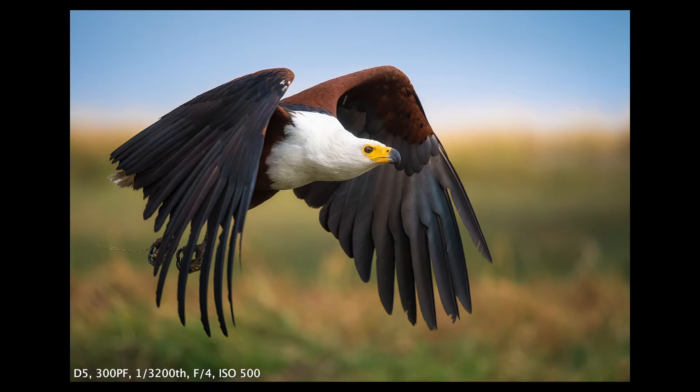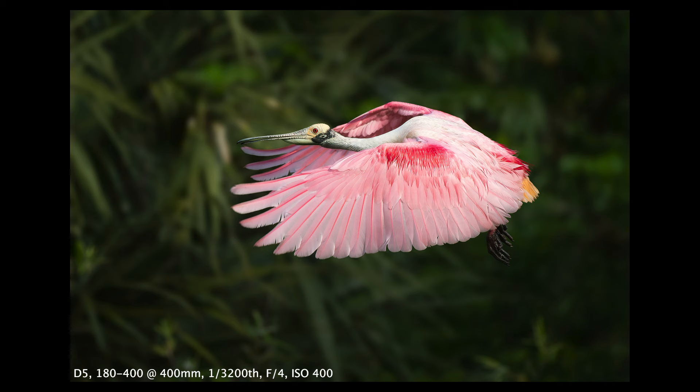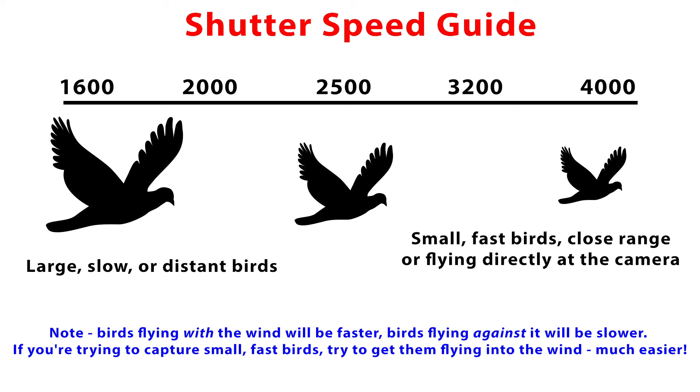Number one: shutter speed. The number one problem I see with bird-in-flight photos is motion blur from not having a fast enough shutter speed. For general bird-in-flight photography where you just want a nice sharp bird, choose a shutter speed between 1/1600th and 1/4000th of a second. My go-to shutter speed for general bird-in-flight action is actually 1/3200th of a second. For large slow-flying birds or birds at more of a distance, you can use the lower end of the scale. For faster birds, closer birds, smaller birds, or birds flying towards the camera, lean towards faster shutter speeds.